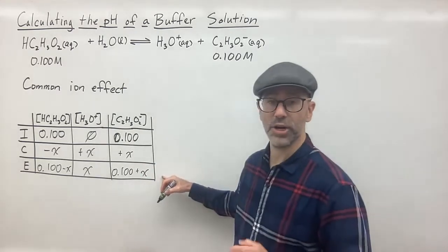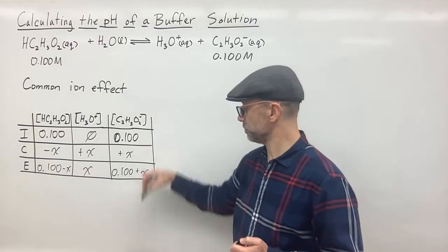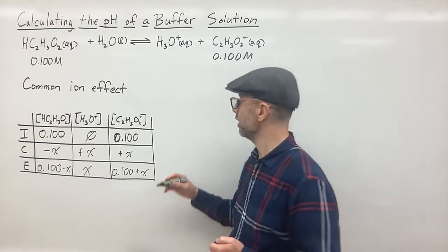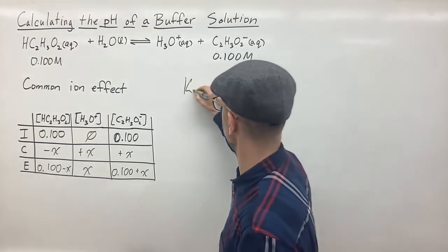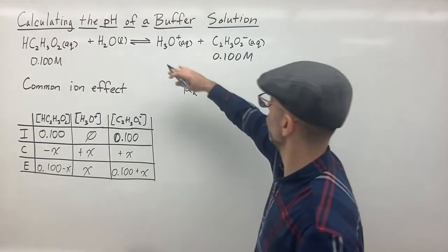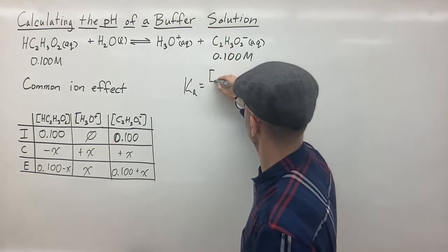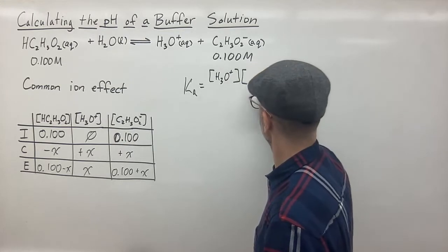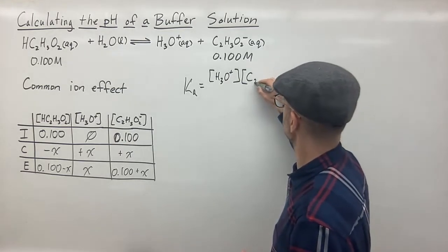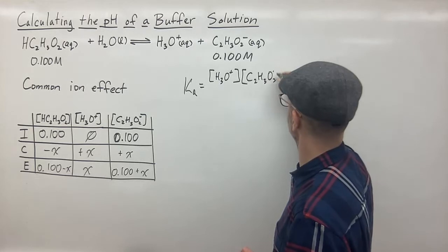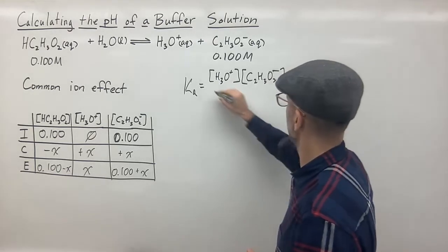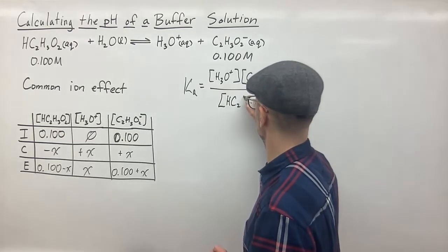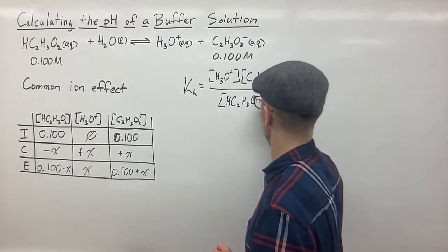And so now that we have our equilibrium expressions for each species, then we plug that into our Ka expression. So Ka, as we know, is going to be the concentration of the products. So we have H3O+ multiplied by C2H3O2- all over the concentration of the acid, which is acetic acid, C2H3O2.